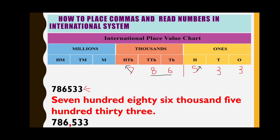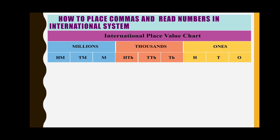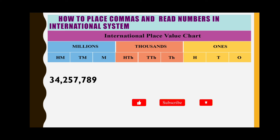To place commas: since we have only two periods, we place a comma at the thousands place — seven hundred eighty-six comma five hundred thirty-three, written as 786,533. Let us see one more example. I have taken the number 34,257,789. Let us write the digits according to their places.